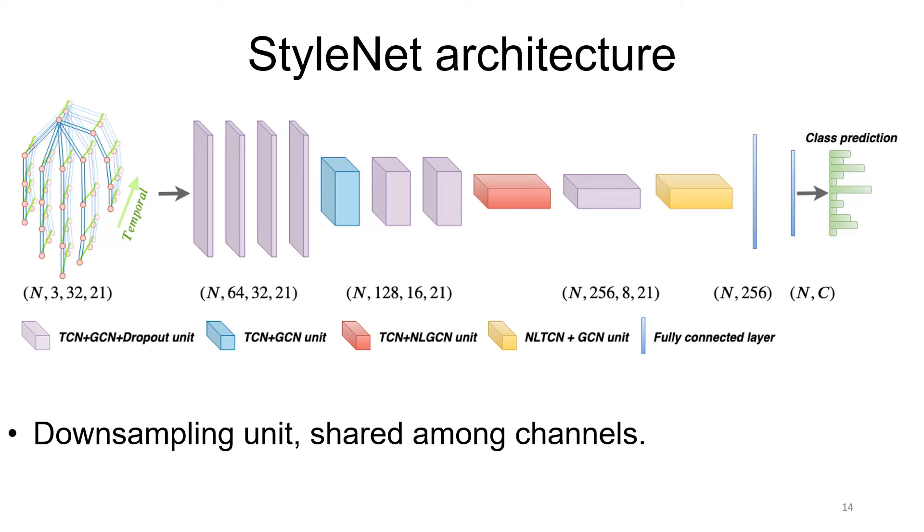For learning style-based recognition, we present StyleNet. It is constructed from 10 spatiotemporal graph convolution layers, followed by a learnable downsampling unit and a fully connected layer that produces the identity probabilities.